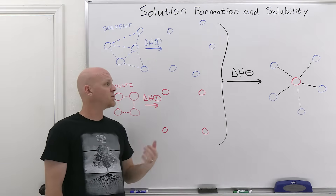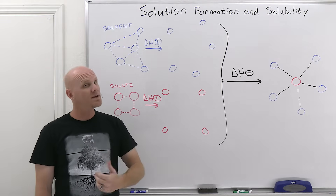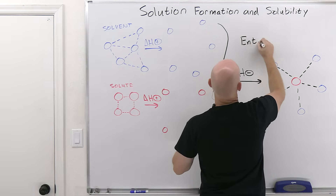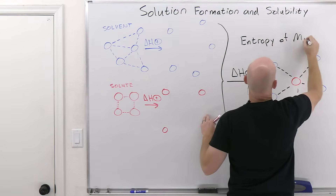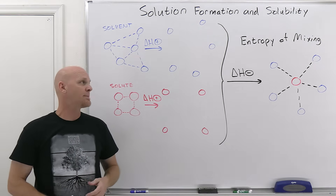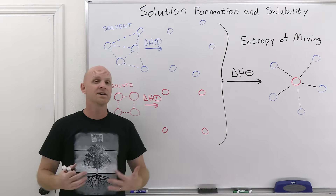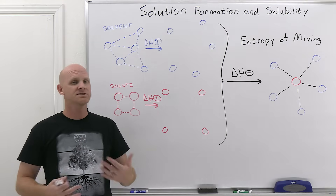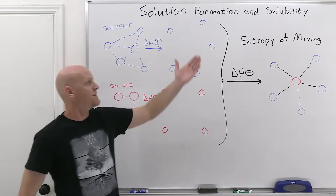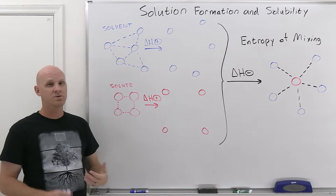It turns out there are two things affecting whether or not this is going to be spontaneous. One of them is delta H — best case scenario, delta H is zero, so it's not helping us in spontaneity but it's not hurting us either. The other driving force is what we call the entropy of mixing. We'll spend more time talking about entropy in thermodynamics, but suffice it to say now, entropy is related to randomness, and an increase in randomness is also favorable.